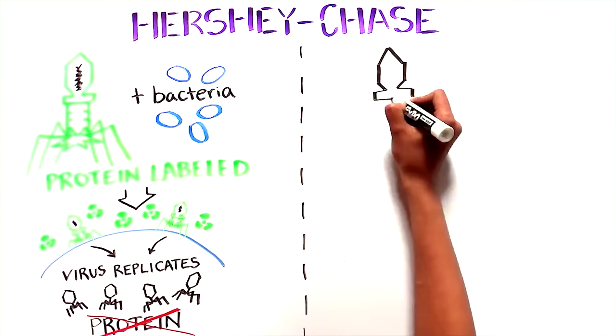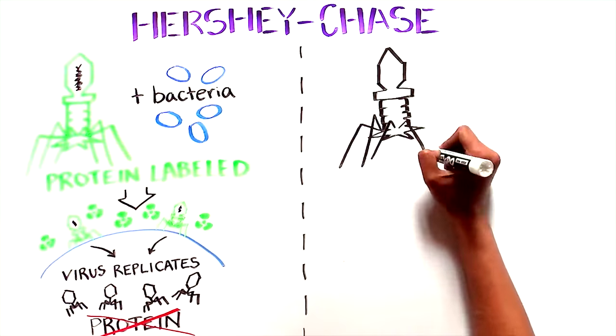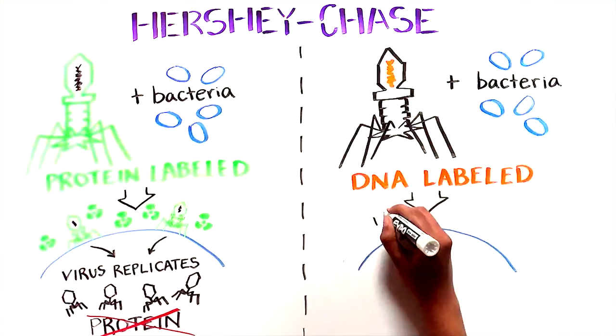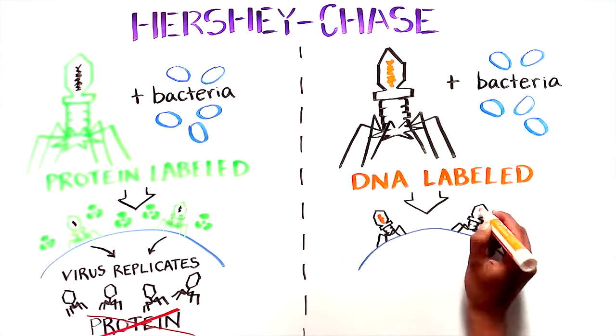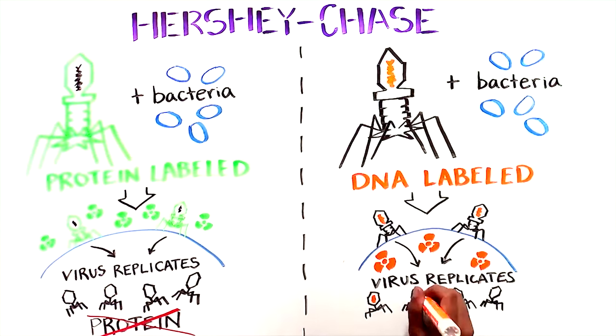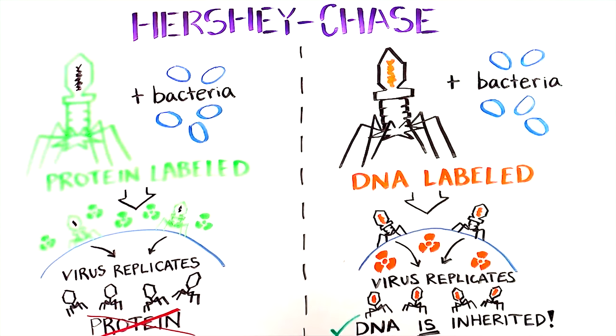On the other hand, when they performed the same experiment using virus with its DNA labeled with phosphate, they found that most of the radioactive DNA was injected into the bacteria from the attacking virus. And much of this labeled DNA was inherited and passed on to the new virus generation.